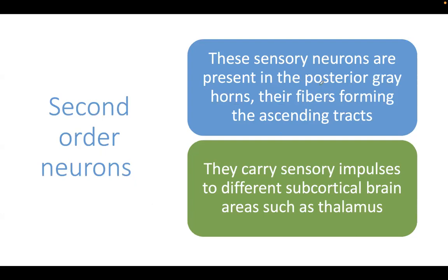For the second order neurons, these are also found in the posterior grey horn, and it is the fibers of the second order neurons that form the ascending tracts. They carry sensory impulses to the different subcortical areas of the brain, particularly the thalamus, which is the major sensory relay area of the brain. For sensory ascending pathways, it goes from the spinal cord to the thalamus.